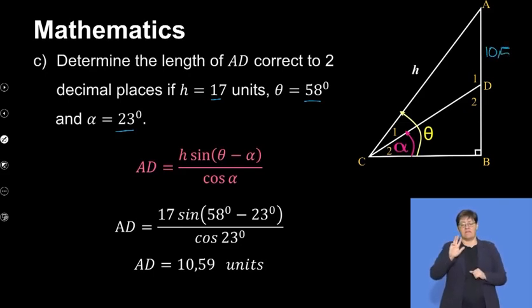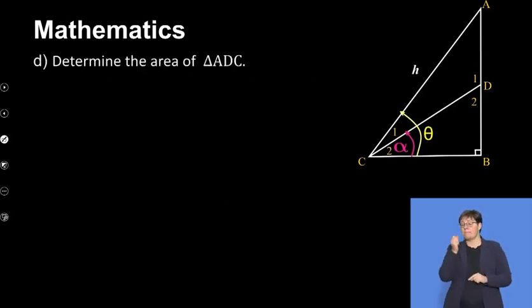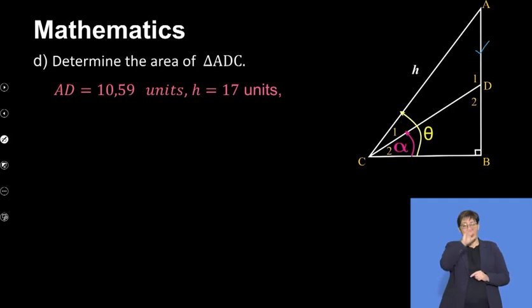The last question is: determine the area of ADC. Now we want to find the area of ADC. Remember, we've just found AD. We know that AD is 10.59 units and we know that h is 17 units because they gave us earlier the value for h. If we can use side-angle-side like this, we can use the area rule of ADC.